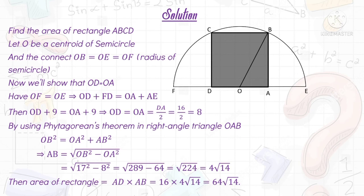Then the area of rectangle ABCD = AD × AB = 16 × 4√14 = 64√14.